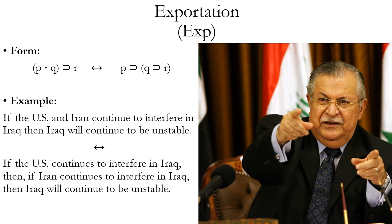Exportation is a rule that lets you move from a conditional that has a conjunction as the antecedent to a conditional that has a conditional as a consequent. The reason why this rule makes sense intuitively is because if you have the proposition 'if P and Q then R,' that's logically equivalent to saying if P is true, then if Q is true, then R will be true.